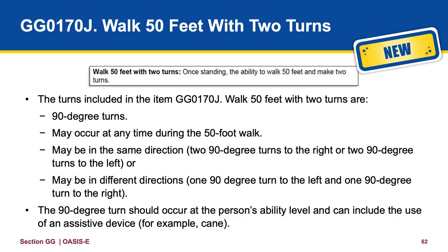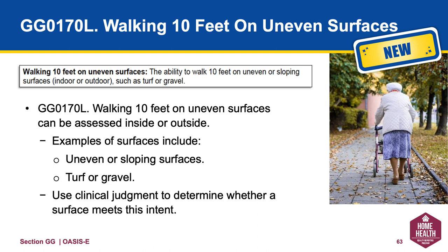170J is testing the patient's ability to maintain balance and gait while making turns. The turns included in 170J are 90-degree turns, may occur at any time during the 50-foot walk, may be in the same direction, or may be one in each of two different directions. The 90-degree turns should occur at the patient's ability level and may include the use of an assistive device. 170L is testing the patient's ability to walk on an uneven surface. Walking 10 feet on uneven surfaces is the ability to walk on turf or gravel.